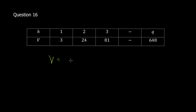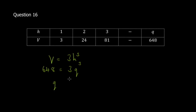We have v equal to 3h cubed and v equals 648. We substitute h equal to q and v equal to 648. Then 648 divided by 3 — dividing both sides by 3 — we get 216. We do the division: 2 into 6 is 3... we get 216.